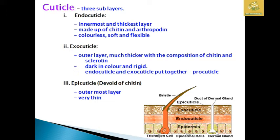The cuticle is classified into three sub-layers: endocuticle, exocuticle, and epicuticle. The endocuticle is the innermost and thickest layer, made up of chitin and arthropodins; it is colourless, soft, and flexible. The exocuticle is the outer layer, also thicker, composed of chitin and is dark in colour, forming a hard, strong surface. Together, the endocuticle and exocuticle produce the procuticle. The epicuticle is devoid of chitin and is the outermost layer.